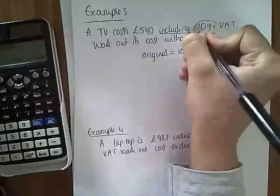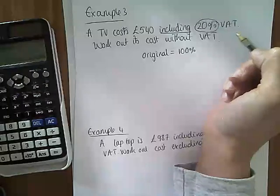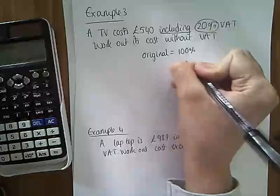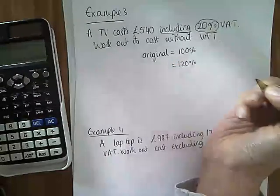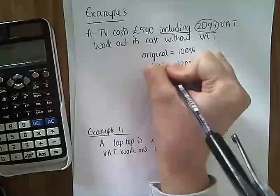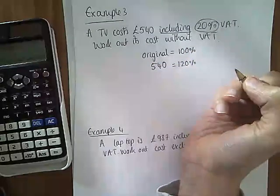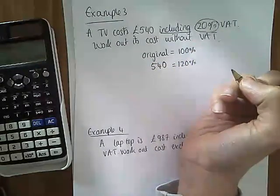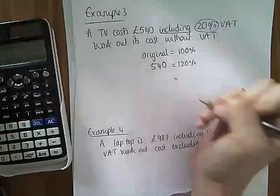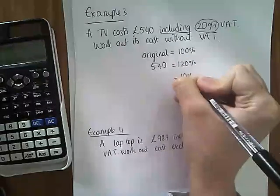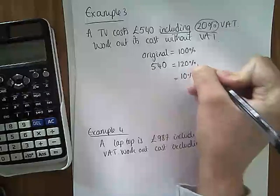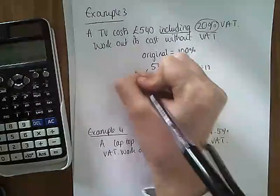We've included, we've added on 20%, which means our new amount is worth 120%. So, £540 equals 120%. We've then got to try and get back to this 100%. So, if I divide by 12, that will give me 10%. Okay.